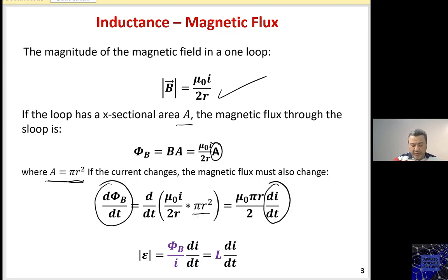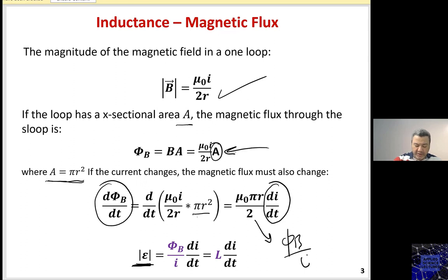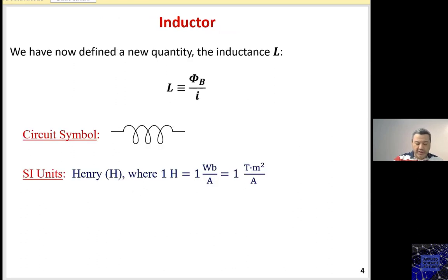Now, μ₀πR/2 is basically φ_B divided by I. So, the magnitude of the induced electromotive force is (φ_B / I) times dI/dt. We define this flux divided by current to be the inductance, which represents how much the loop opposes the change in current. So the inductance L equals φ_B divided by I.